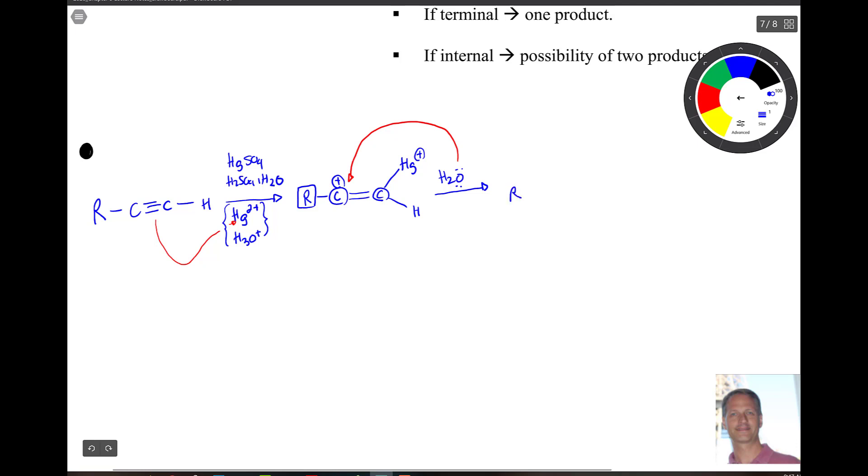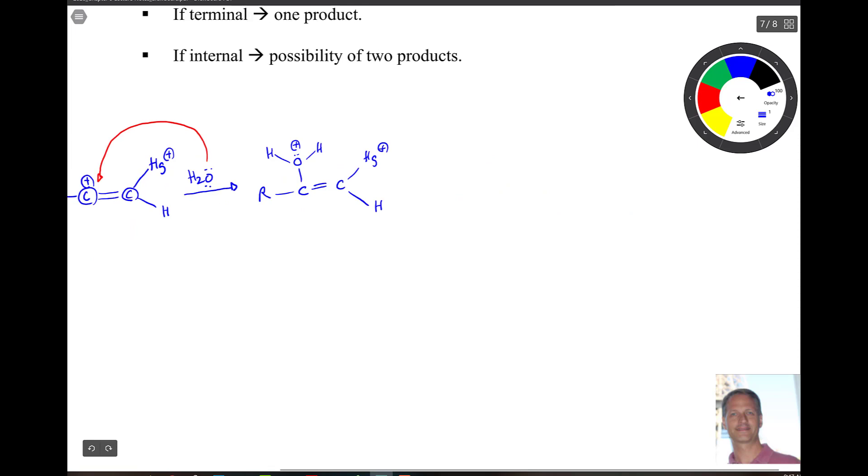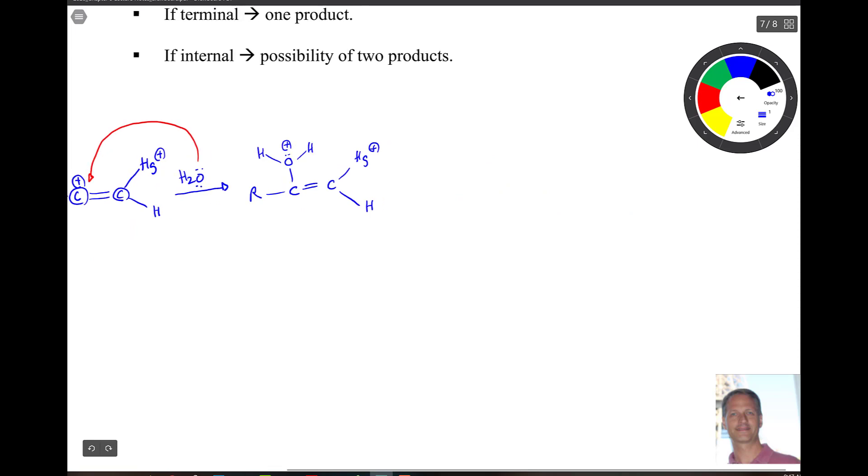All right, that'll give us our R group double bond Hg plus HOH plus. And then we need to get rid of that proton. So we're going to use water to do this. So let's pull this thing over a little bit more. Let's continue that reaction. So we're going to move over here.